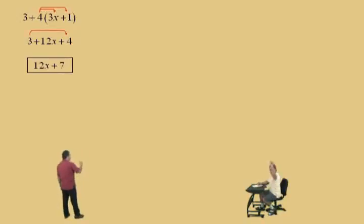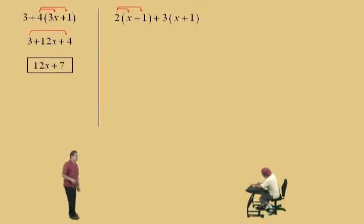Here we go. Now, we have 2 times the quantity x subtract 1 plus 3 times x plus 1. Remember, we can't do the parentheses first, but we have to do the multiplications before we do addition. And so, our multiplication requires the distributive property. So, we go 2 times x, and then we'll do 2 times a negative 1. And then, we'll do a positive 3 times x and a positive 3 times 1. And so, here we go.